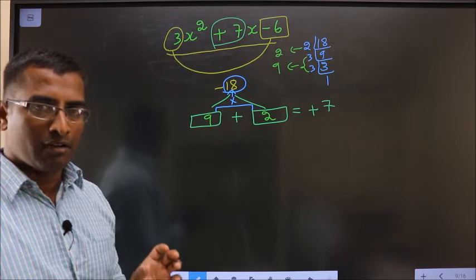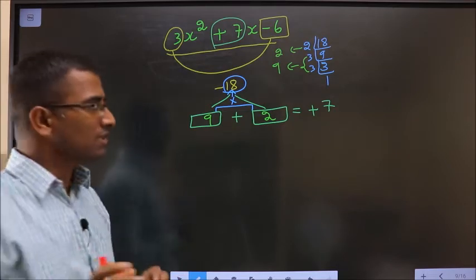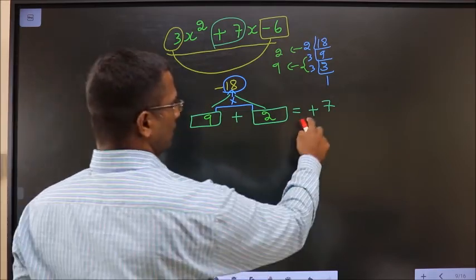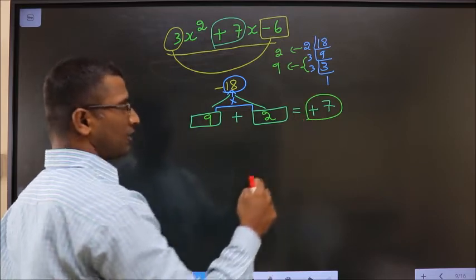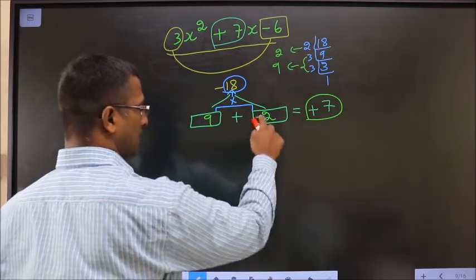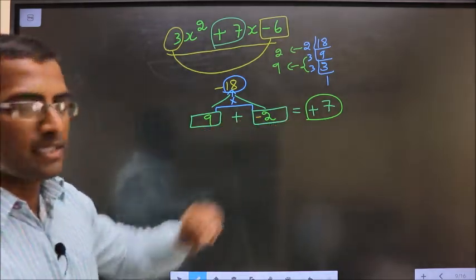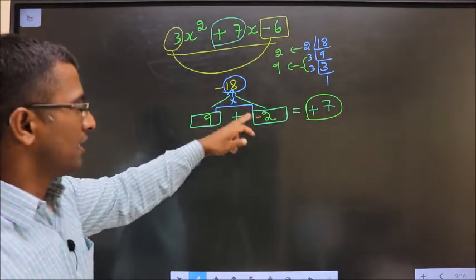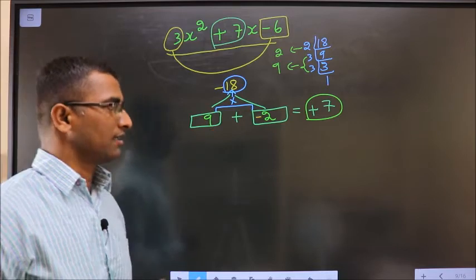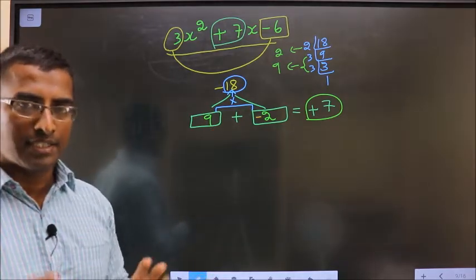Clear? Now, adjust the signs. Here I should get plus 7. That could only happen if I place minus before 2. 9 minus 2 is plus 7. 9 into minus 2 is minus 18. Clear? We have adjusted the signs.